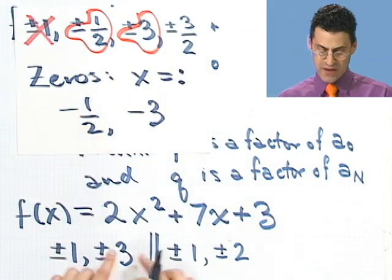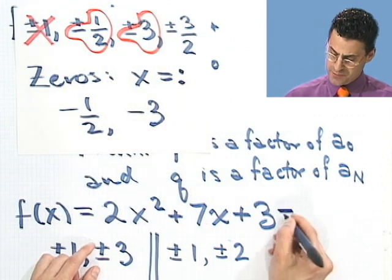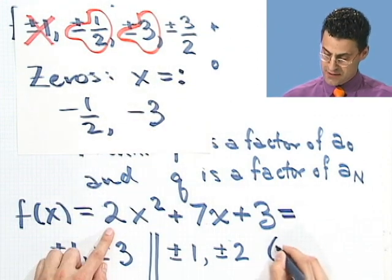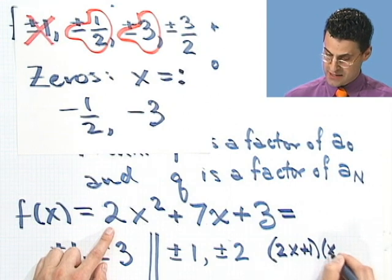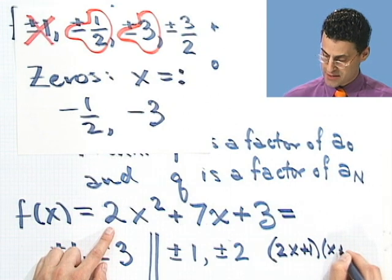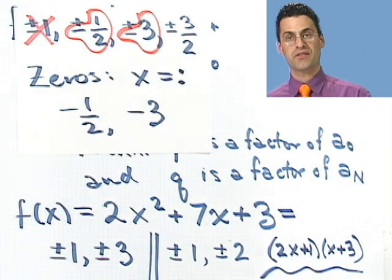So there you have it. So in fact, these always give you the candidates. You can always make a complete list. Now of course, this one we could have factored directly: 2x plus 1 times x plus 3. So in fact, this is one of these guys that could have factored them. We could have gotten the roots that way.